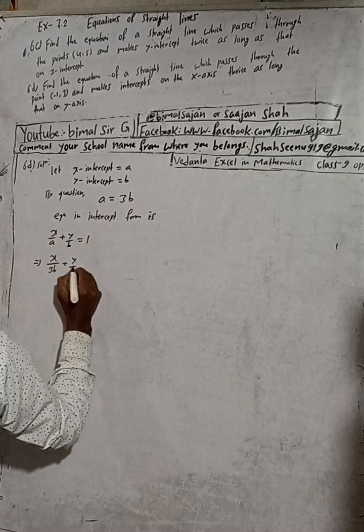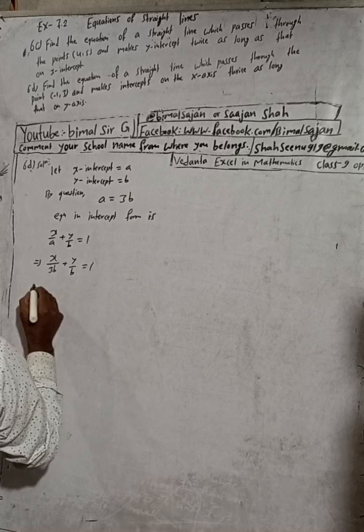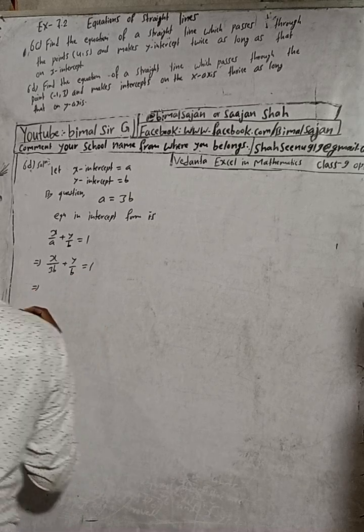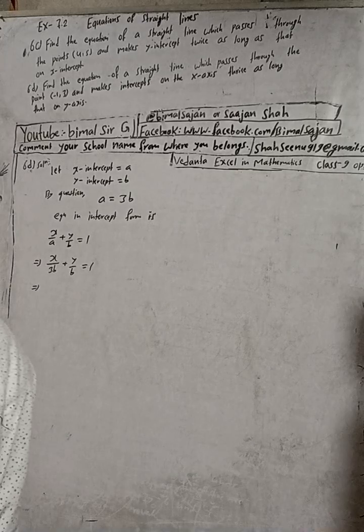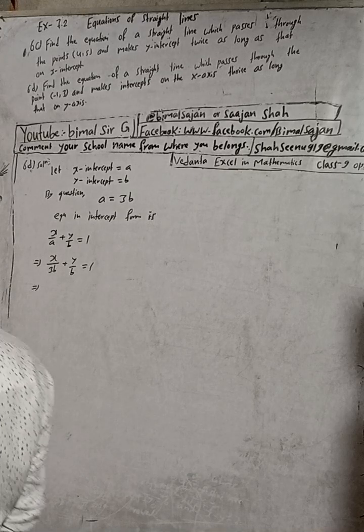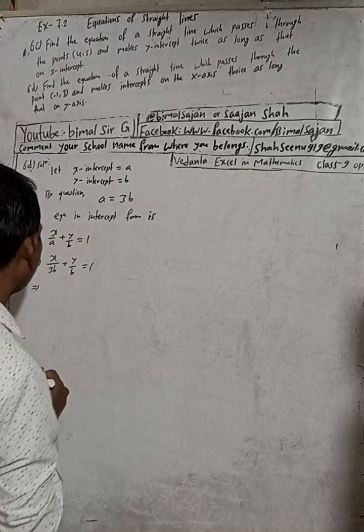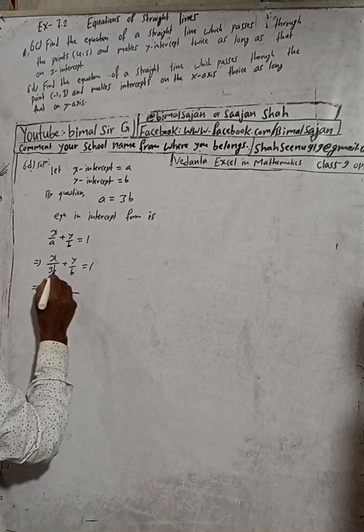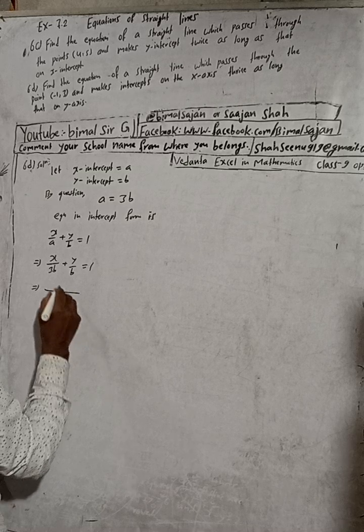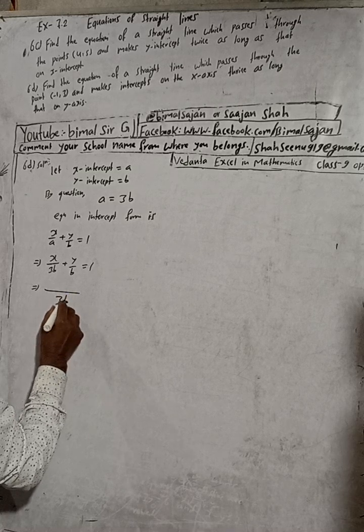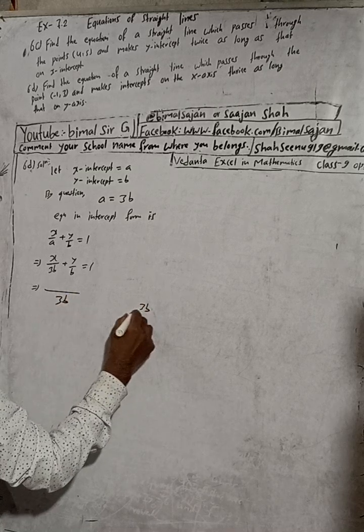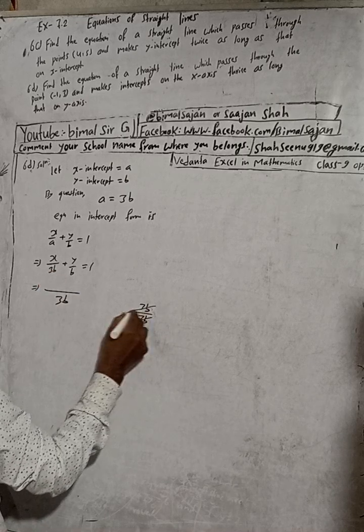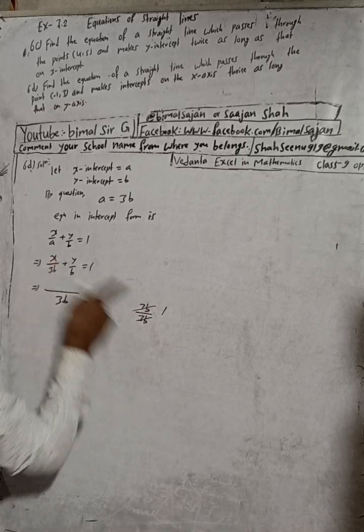This implies here x by, in place of a put 3b, so x by 3b plus y by b is equal to 1. Now here the LCM is 3b, so take this 3b.